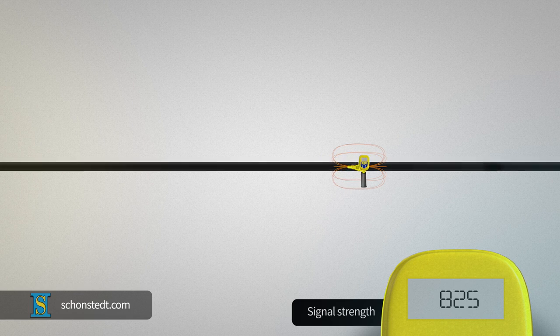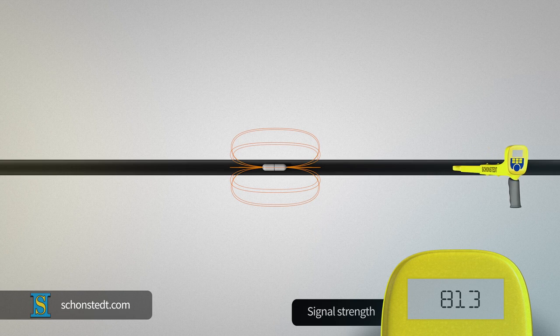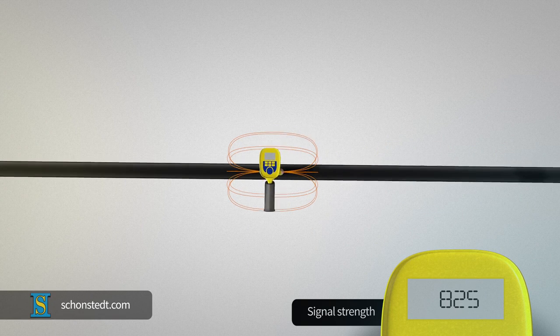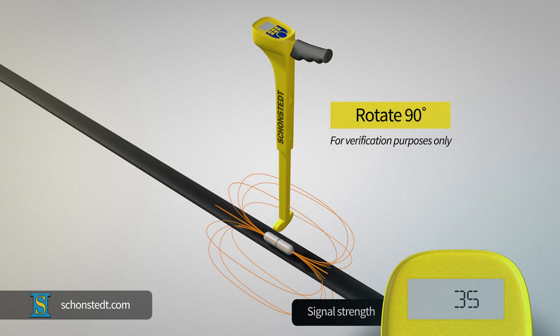When you move past the sonde location, the signal will start dropping again, giving you a general idea of the sonde's location. You can move back to find the strongest signal and, at that point, rotate the receiver 90 degrees, verifying that the signal drops significantly to a null.